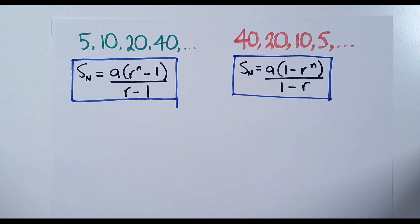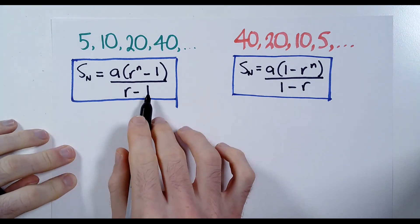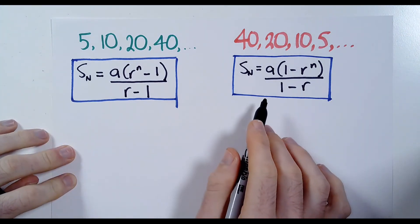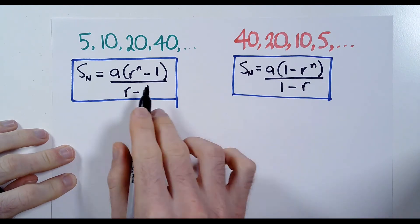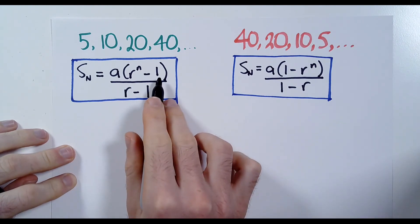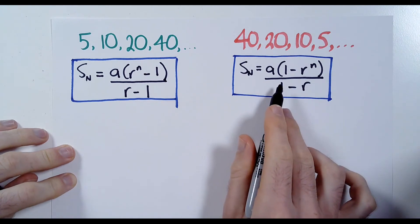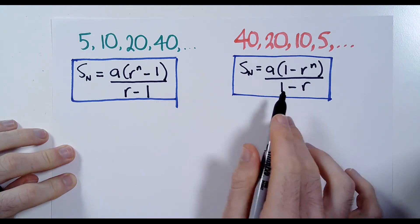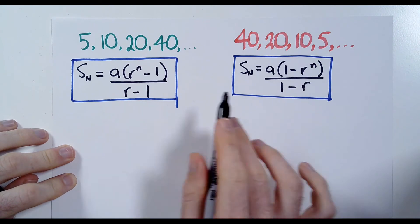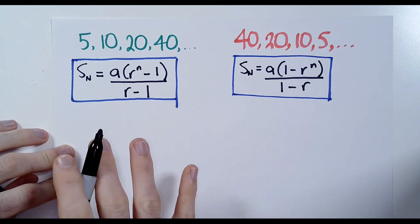I've got two examples here to show the two different variations of the formula. In the blue box, these are the two formulas — or formulae — and you can see they are slightly different. The R's and the 1's are in the opposite order for these two different versions, and you use one of these two depending on the type of geometric progression you're dealing with.